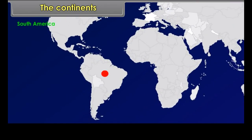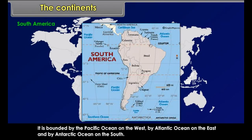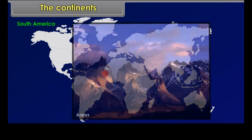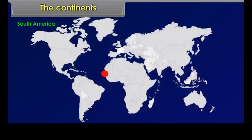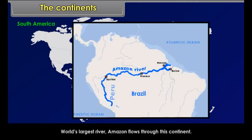South America. South America lies mostly in the southern hemisphere. It is bounded by the Pacific Ocean on the west, the Atlantic Ocean on the east, and the Antarctic Ocean on the south. The world's longest mountain range, the Andes, runs through its full length. The world's largest river, the Amazon, flows through this continent.